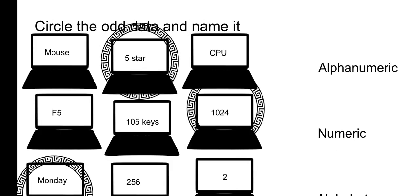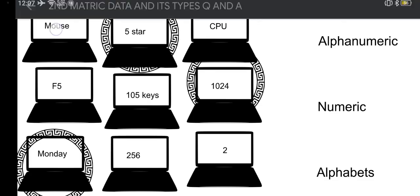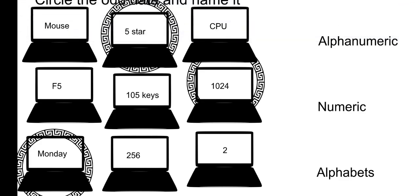Now the third exercise: in every row, one item is the odd one out. You have to identify what type of data the odd one is. First row: mouse, Five Star, CPU. Mouse and CPU are alphabetic, but Five Star is alphanumeric — so the odd one is Five Star, type: alphanumeric.